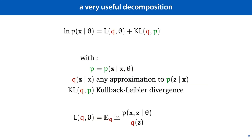Now with this q in hand, we can write out the following decomposition. We can show that the likelihood p of x given theta, which we cannot easily optimize for, decomposes into two terms: a function L of q and theta, and a KL divergence between q and the function it approximates. We met the KL divergence before in lecture 5. It is the distance between two probability distributions — it tells us how good an approximation q is for the distribution p of z given x and theta. The worse the approximation, the greater the KL divergence. L is just a relatively arbitrary function, but we can prove that when we rewrite the log-likelihood of x, L plus the KL divergence makes the log-likelihood.